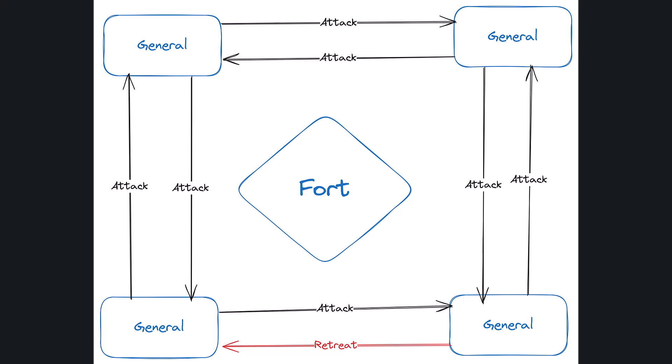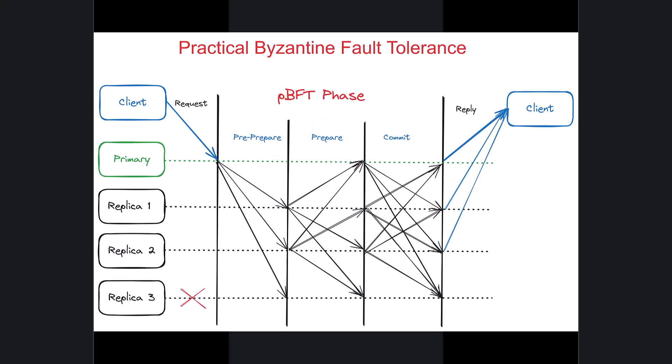So how to handle this kind of situation? There is an algorithm, Practical Byzantine Fault Tolerance. This algorithm was introduced in 1999. The protocol operates in a multi-round voting process where nodes take turns acting as a primary node that is responsible for proposing the next block of transactions.